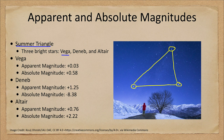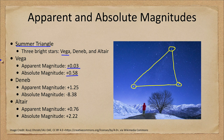Vega has an apparent magnitude of +0.03, making it one of the brighter stars in the sky, and its absolute magnitude is +0.58. That means Vega appears brighter than it would if it were 10 parsecs away, so it must be closer than that — it is a relatively nearby star, within about 30 light years of Earth.